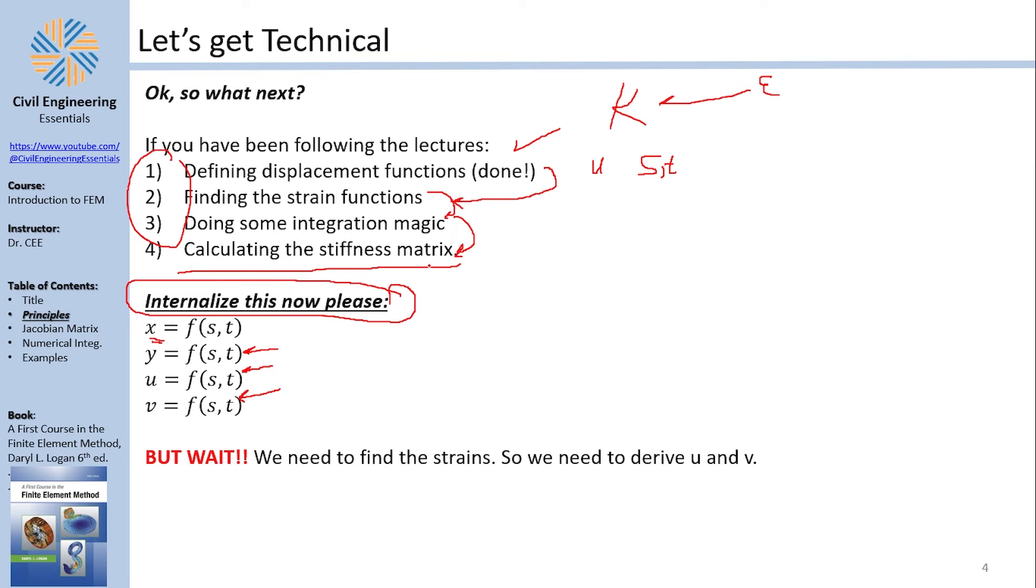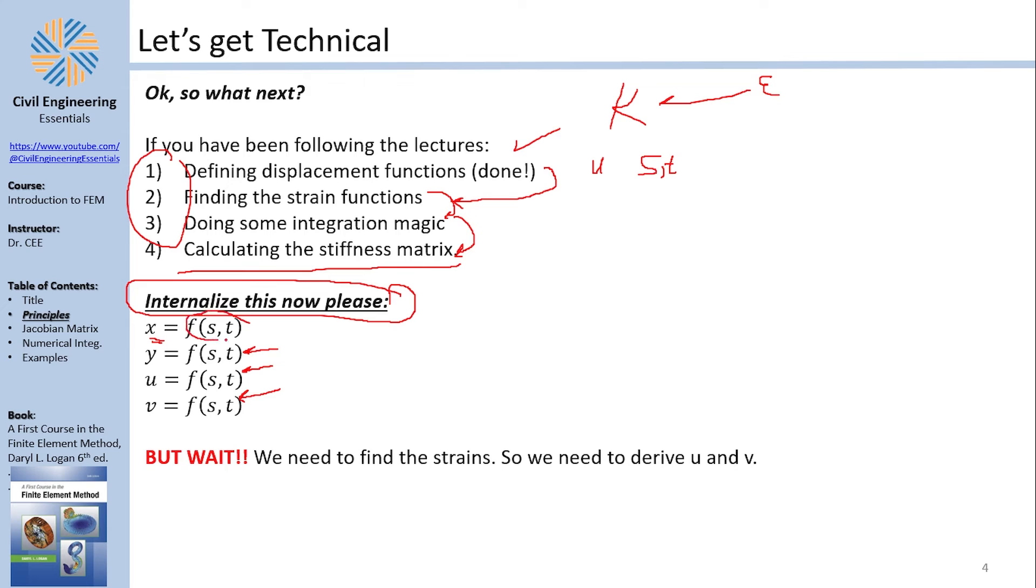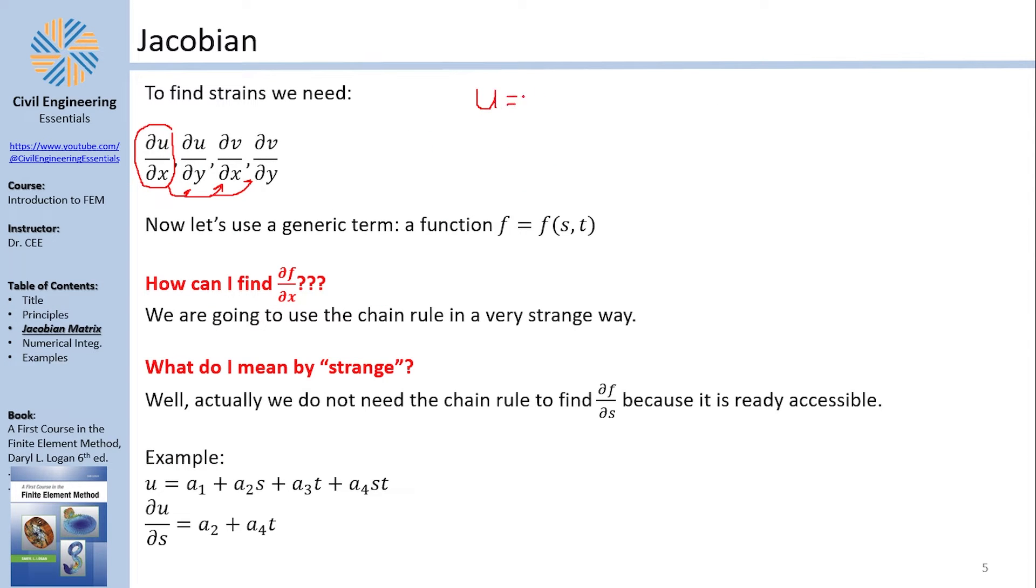Let's internalize this first. x is a function in s and t, y is a function in s and t, u is a function in s and t, and v is a function in s and t. Since we are deriving the stiffness matrix of the real element, we need the strains of the real element. Now, the real element is in x and y. And to find the strains in x and y, I need to derive or partial derive the displacements with regard to x and with regard to y. Now, this is not easy because u is a function of s and t. So how can I derive u with respect to x?